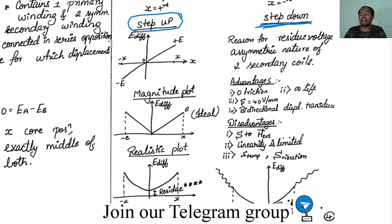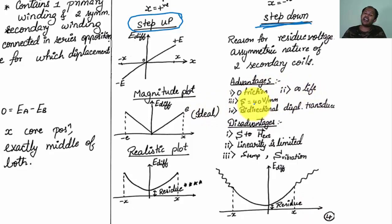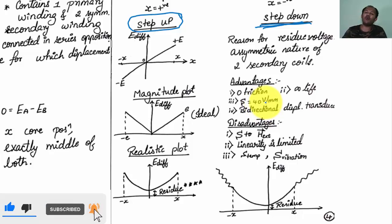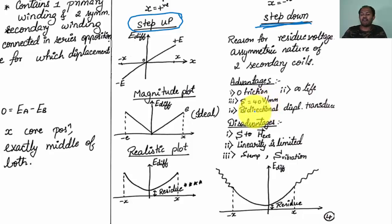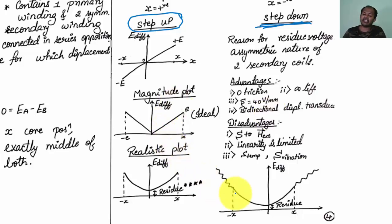Advantages of LVDT: first, zero friction; second, infinite life; third, very high sensitivity of the order of 40 volts per millimeter — for every 1 mm displacement you get 40 volts at the output; fourth, it is a bidirectional displacement transducer. Disadvantages: it is highly sensitive to external magnetic fields; linearity range is limited; and it is sensitive to external temperature and vibration.